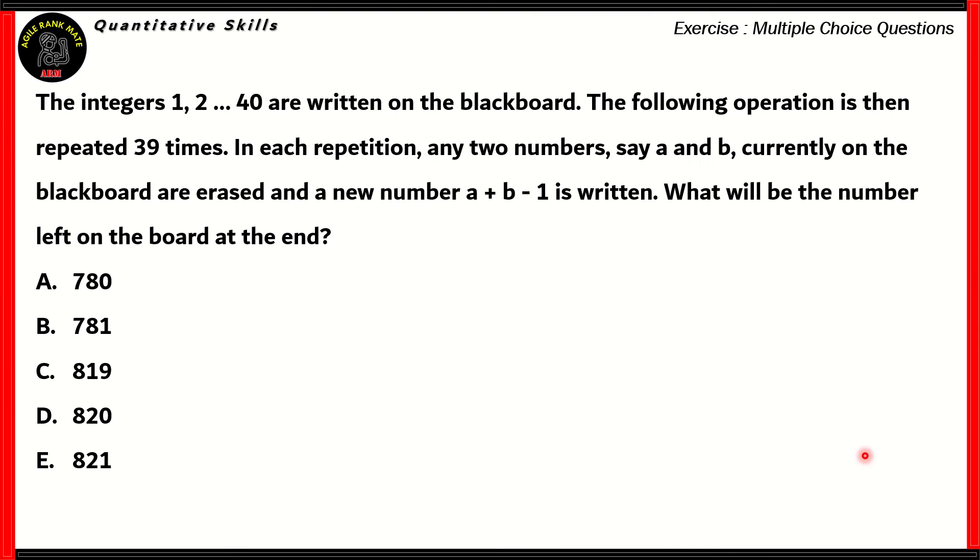Let's look at our first question. The integers from 1 to 40 are written on the blackboard. The following operation is done repeated 39 times. In each repetition, any two numbers, say A and B, currently on the blackboard are erased and a new number A plus B minus 1 is written. What will be the number left on the blackboard at the end? Is it 780, 781, 819, 820, or 821?